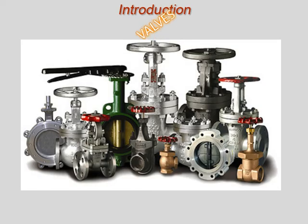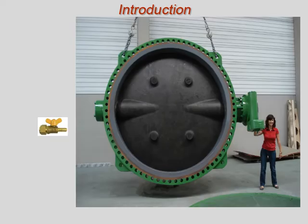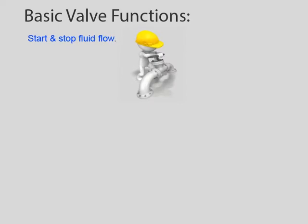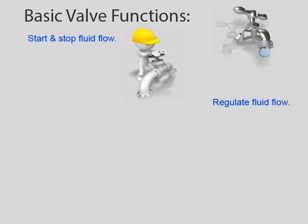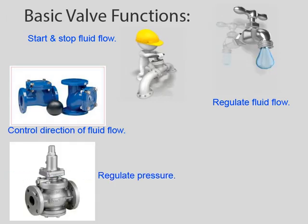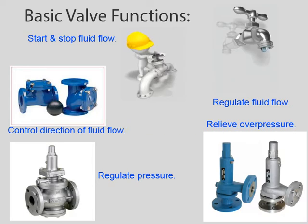The first of the mechanical components in this series are VALVES. Valves come in many shapes and sizes and all have their own advantages and disadvantages. You should be familiar with the basic valve types in order to understand their functions and purposes. The basic functions that valves can provide are: start and stop fluid flow, regulate fluid flow, control the direction of fluid flow, regulate pressure, and relieve over pressure.